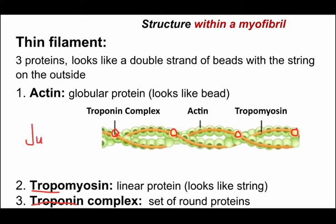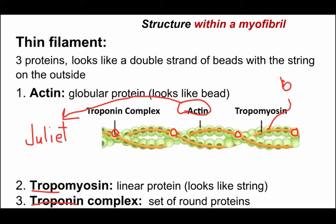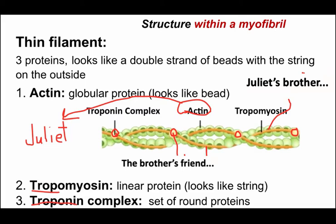One of the best analogies for how muscle contraction works is the story of Romeo and Juliet — but with a happy ending. The actin molecules are like Juliet, and the tropomyosin is like her brother, who's supposed to guard her from Romeo. But he has a friend who sometimes distracts him, and that's what allows Romeo and Juliet to bind.